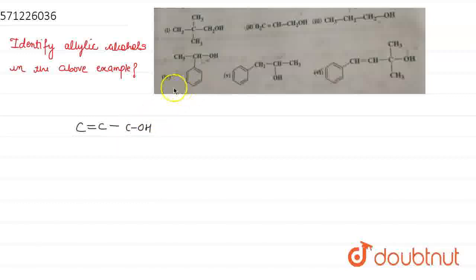So, in these examples, we have only two examples in which double bonds are involved, in this and in this. Now, we have to check if these are allylic or not.